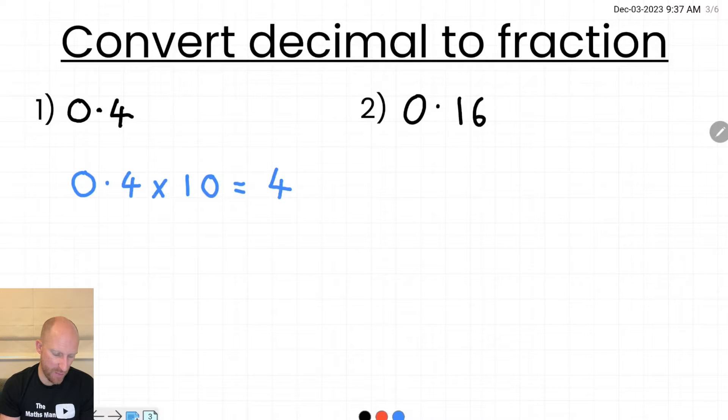So as you can see if I multiply 0.4 by 10 it gives me 4 which is a whole number. Now that 4 is going to be my numerator for when I convert this into a fraction. And my denominator is going to be the 10 because I multiplied it by 10. So 0.4 as a fraction is 4 tenths.